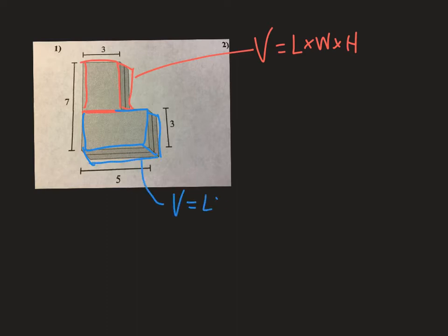One of these is going to be easy peasy lemon squeezy, and one is going to involve just a little bit of math. Let's start with the one highlighted in blue. The length is 5, the width is 3, and the height is shown in layers — I can see 2 layers.